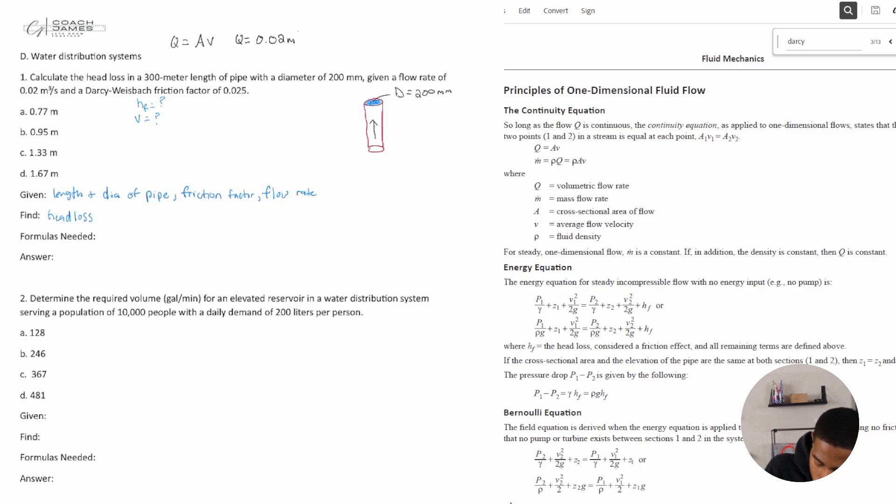So Q is equal to 0.02 meters cubed per second. A is equal to—well, what's the area of a circle? Pi r squared. And we want to keep everything in meters, so what is r? r is equal to diameter divided by 2, right? 200 millimeters divided by 2 equals 100 millimeters, or 0.1 meters.